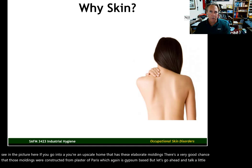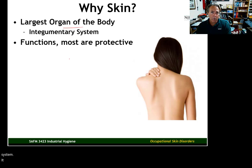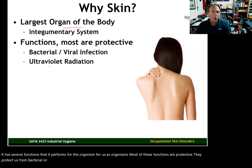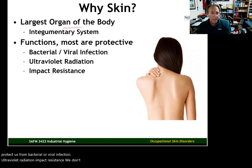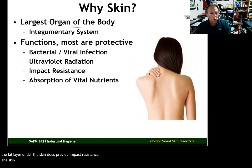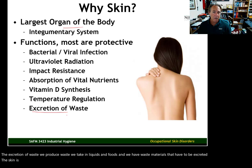Let's talk a little bit more about why we should be focused on the skin as safety professionals. It is the largest organ of the body — it's part of the integumentary system. It has several functions that it performs for us as organisms, and most of these functions are protective. They protect us from bacterial or viral infection, ultraviolet radiation, and impact resistance. The skin along with the fat layer underneath does provide impact resistance. The skin also allows us to absorb certain vital nutrients, it's involved in vitamin D synthesis, temperature regulation, and the excretion of waste. When we sweat, we are excreting waste materials from the body.